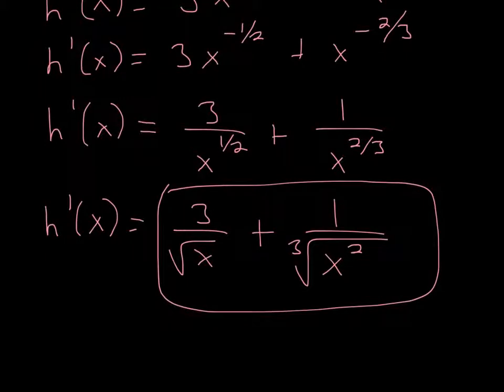And then finally, to finish it, just simplify even more. And x to the 1 half is square root x. Same thing here. Like I said, the denominator is whatever root it is. So it would be cube root here and then x squared here.